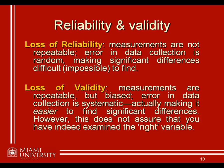If we have so much error that we don't really know what we're measuring because our measurements are all over the board — say we have an instrument and we think it measures intelligence, but it's so inconsistent that it's producing intelligence scores all over the place — then we'll never really know if we're actually measuring intelligence. It will also make it very difficult to find significant differences across gender, age, or anything else.